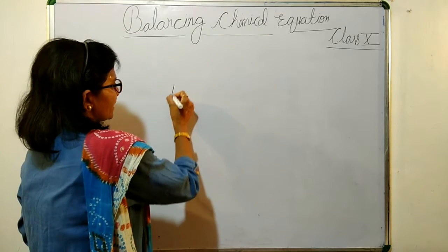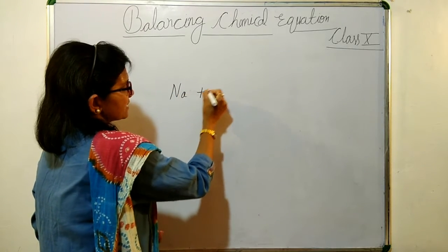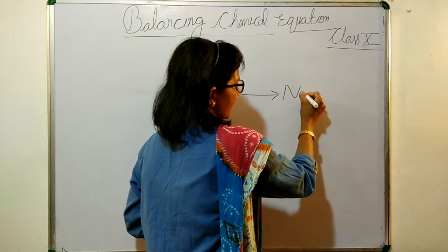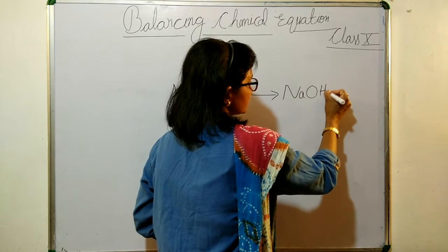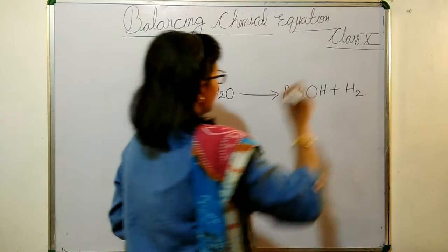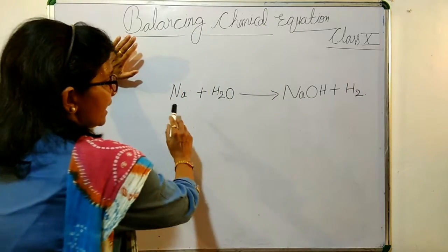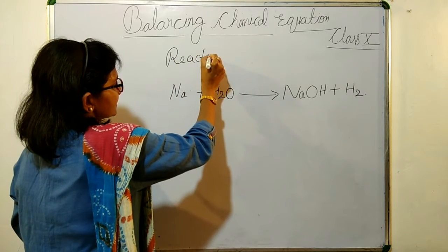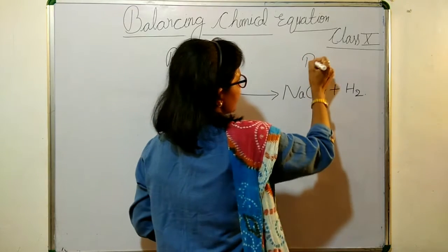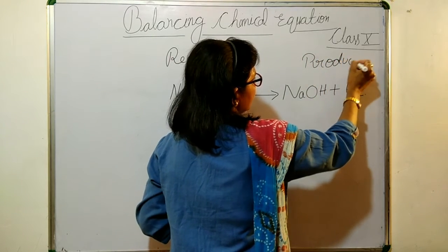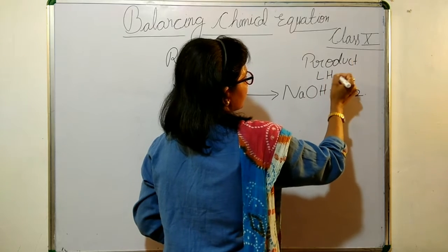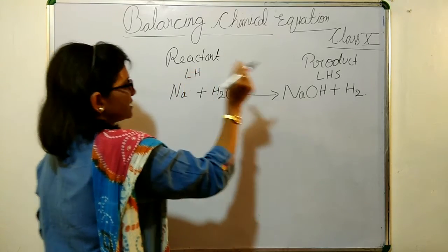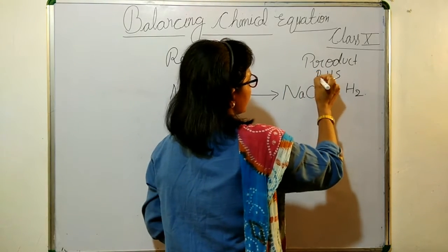Let's see one example: Na plus H₂O — here water reacts to form NaOH plus H₂. Let's see if this is a balanced equation. The reactant side is on the left hand side and the product side is on the right hand side.